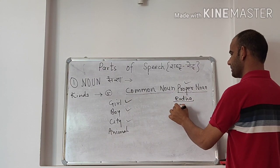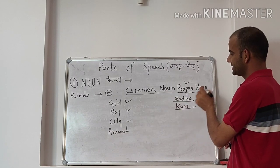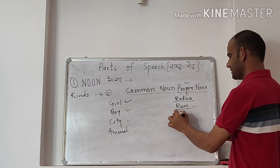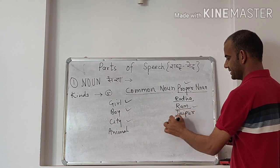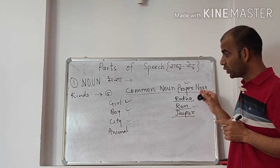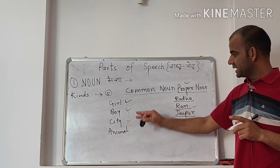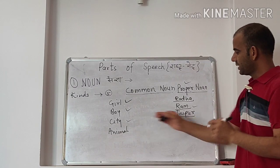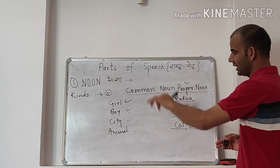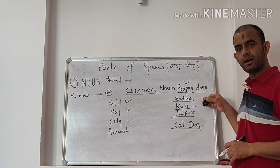Boy, we give an identity to this boy and this is Ram. Ram is proper noun and boy is common noun. City, Jabalpur. City is common noun but Jabalpur is proper noun because we have given a name, a particular name to this city and that particular name is Jabalpur. Animal, we can say cat, dog. These all are proper nouns because these have got their identification.